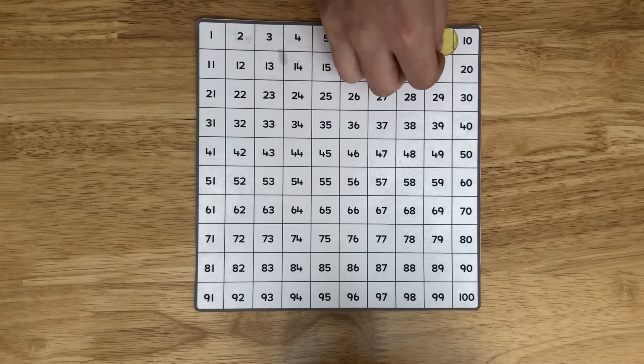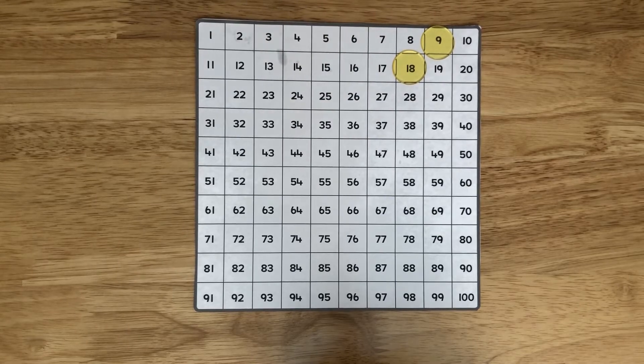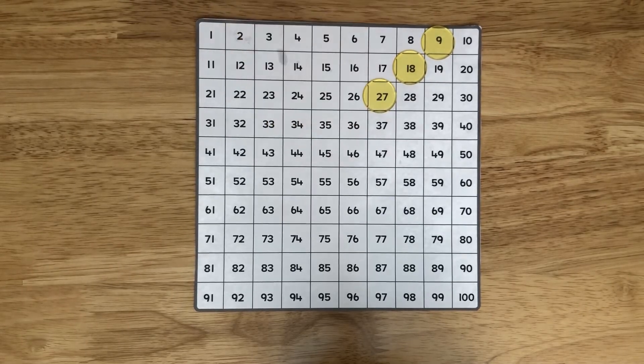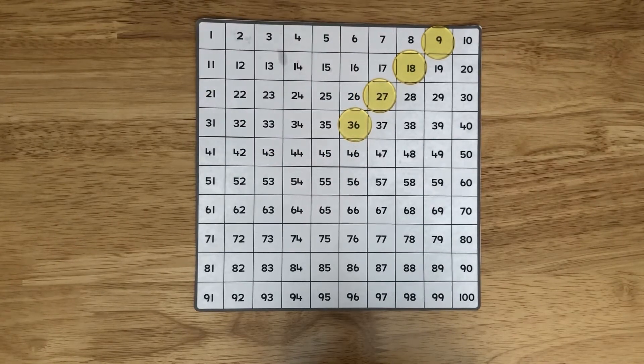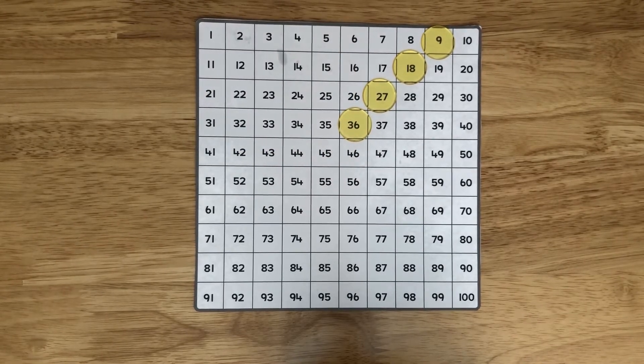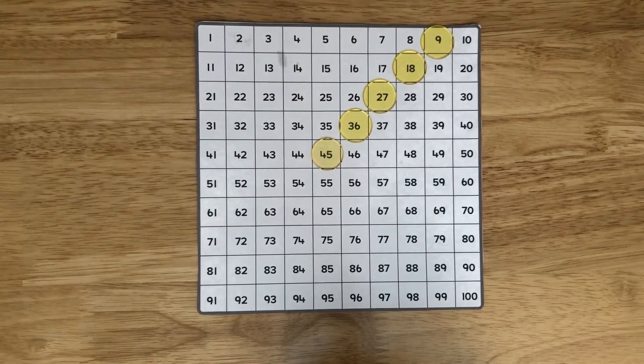We know one times nine is nine, two times nine is 18, three times nine is 27, four times nine is 36. Can you guess where five times nine is going to be? Yeah, it's 45 because there's a diagonal line going through.